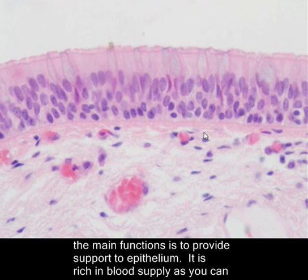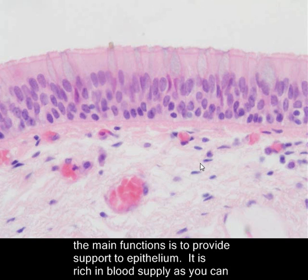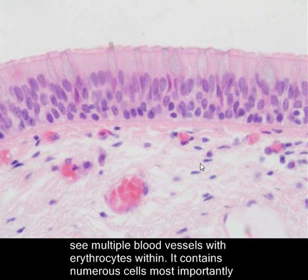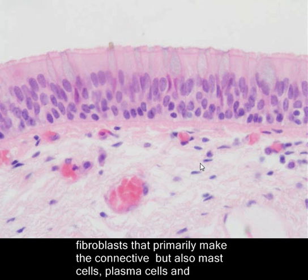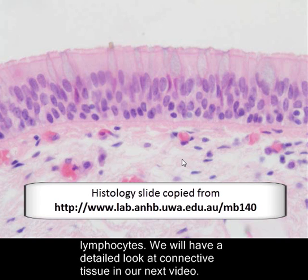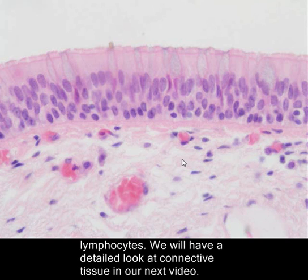As you can see, there are multiple blood vessels with erythrocytes — red blood cells — within them. It contains numerous cells, most importantly fibroblasts that primarily make the connective tissue, but also mast cells, plasma cells, and lymphocytes. We will have a detailed look at connective tissue in our next video.